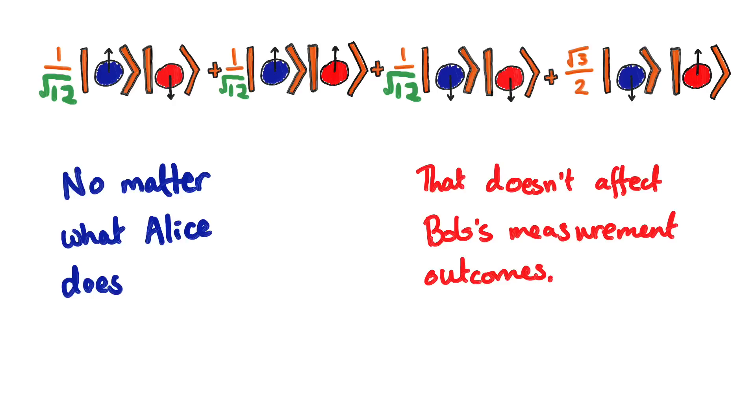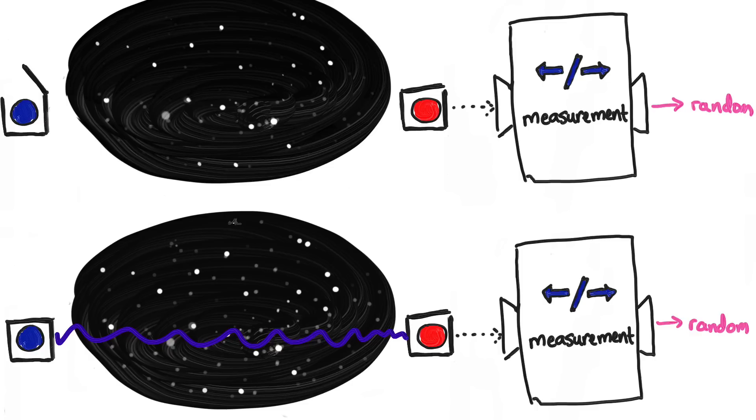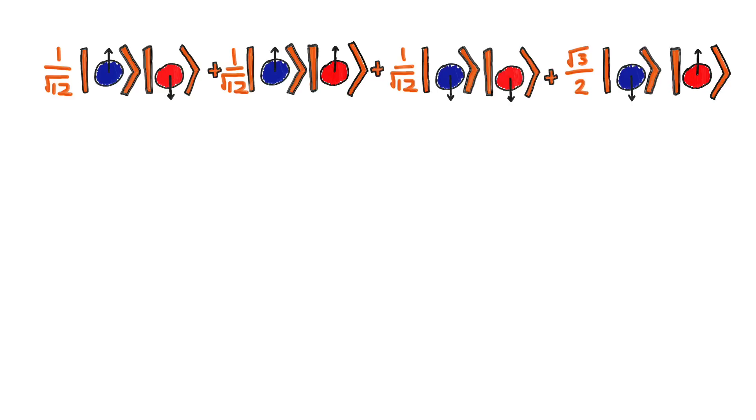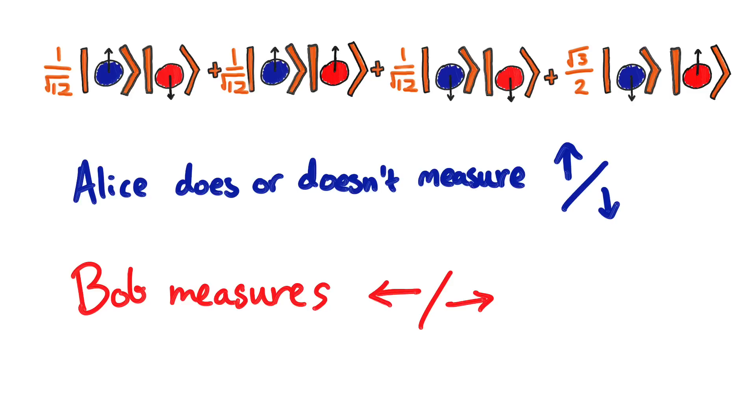You need to prove that no matter what Alice does on her side, that doesn't affect Bob's measurement outcomes. For example, in either case, when Alice does or doesn't choose to do a measurement, Bob gets up or down with the same probability either way. This can be proved more generally, but it's a little bit tough. Instead, I'm going to get you to do it for an example that's a bit more challenging than the one I did. Prove it for this state, when Alice measures up and downness and Bob measures left or rightness. I'm going to write out a detailed solution in the description, but ask me if you get confused.